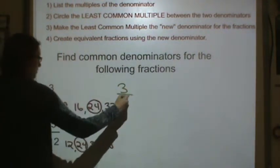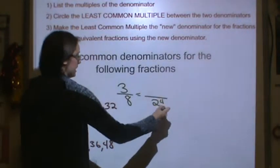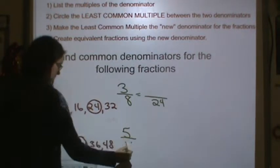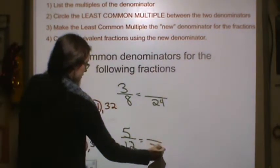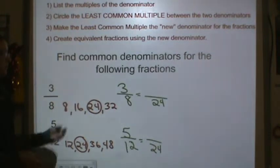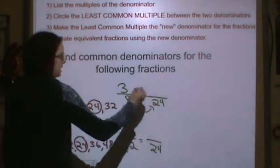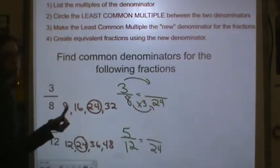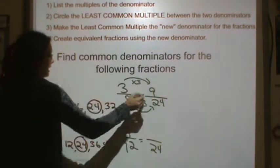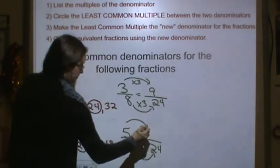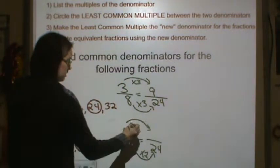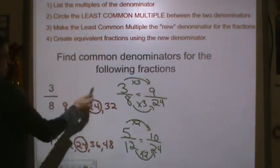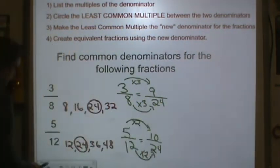Now I'm going to set up an equivalent fraction with my new denominator that is the common multiple. So I have 3 eighths equal something 24ths and 5 twelfths is equal to something 24ths. Remember when we are finding equivalent fractions we multiply the top and bottom by the same number. So 8 times 3 is equal to 24. So 3 times 3 is equal to 9. 12 times 2 is equal to 24. So I need to also multiply 5 times 2 to get 10. So we have common denominators 24ths and 24ths.